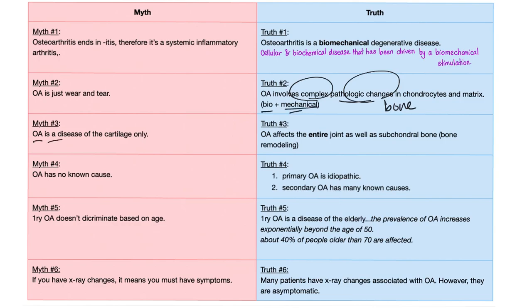Myth number three: osteoarthritis is a disease of cartilage only. Osteoarthritis affects the entire joint as well as the subchondral bone — loss of cartilage, growth of bone.